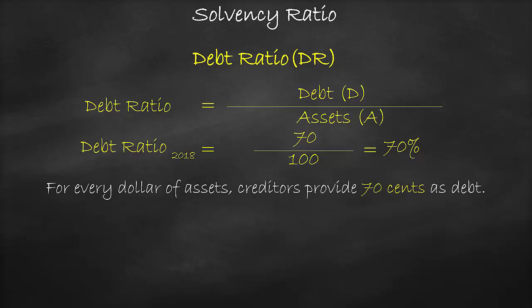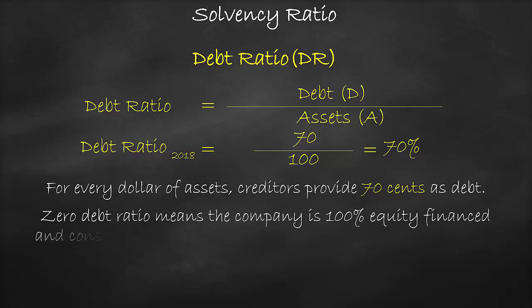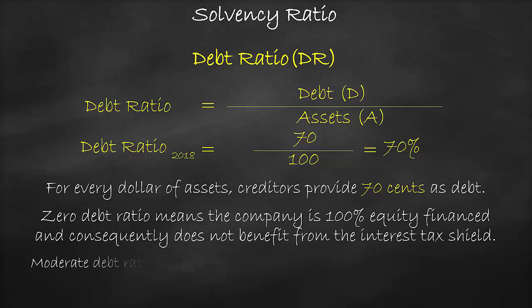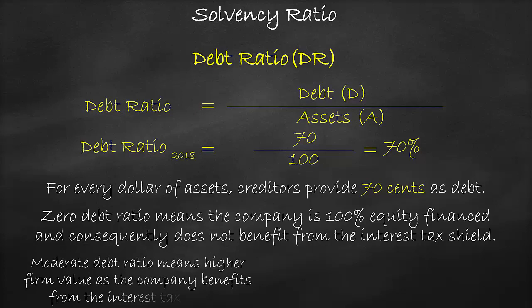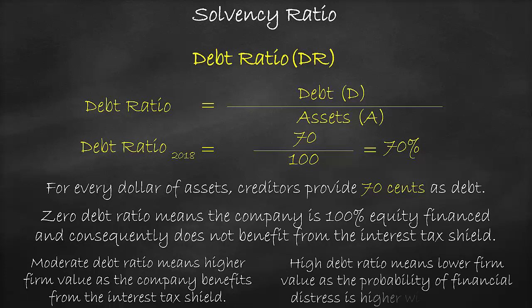A zero debt ratio means that the company is 100% equity financed and consequently does not benefit from the interest tax shield. A moderate debt ratio means a higher firm value as the company benefits from the interest tax shield. A high debt ratio means lower firm value as the probability of financial distress is higher with more debt.